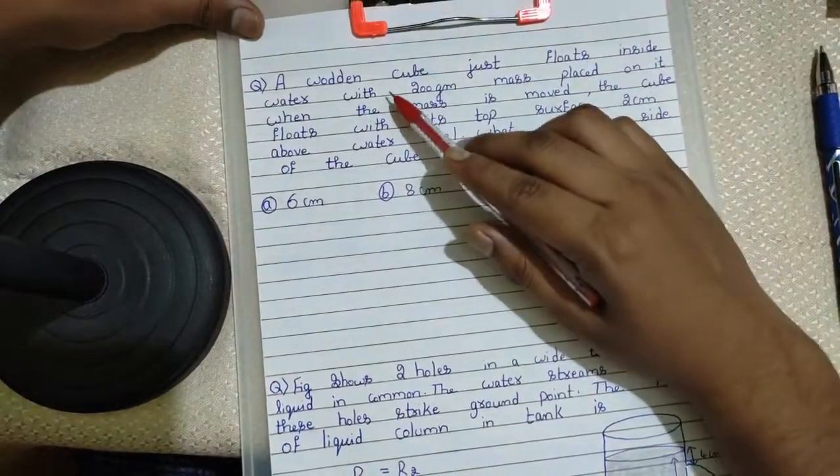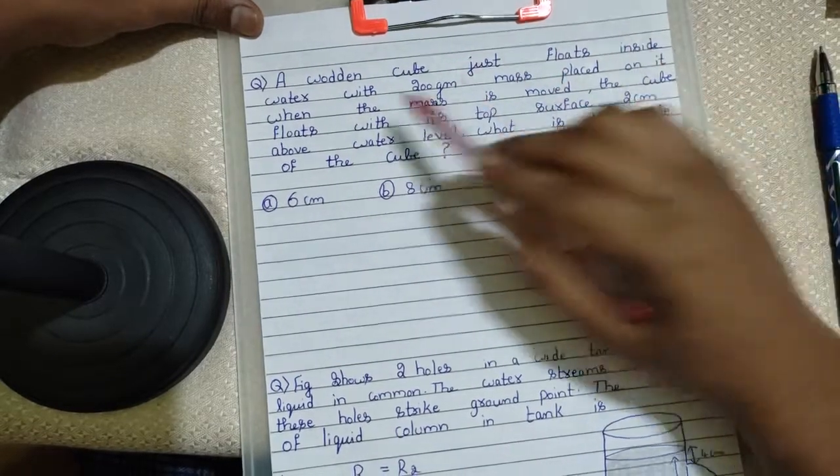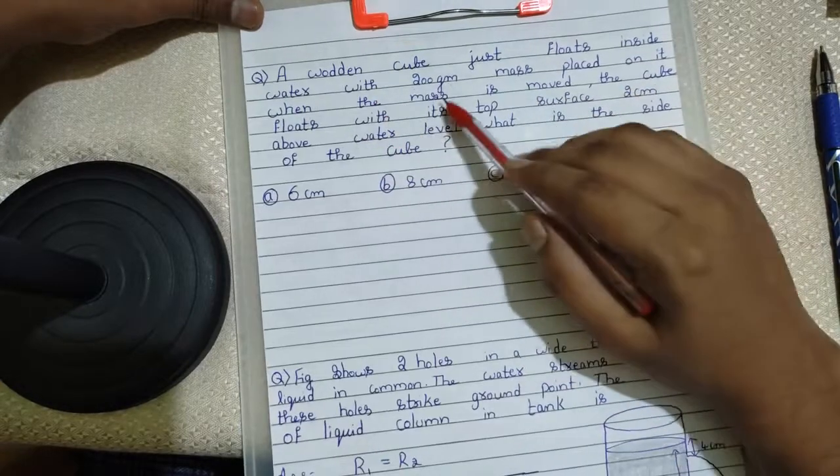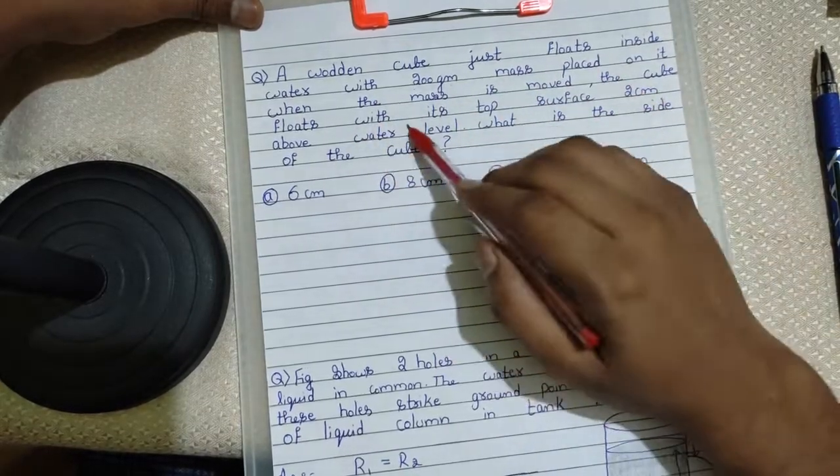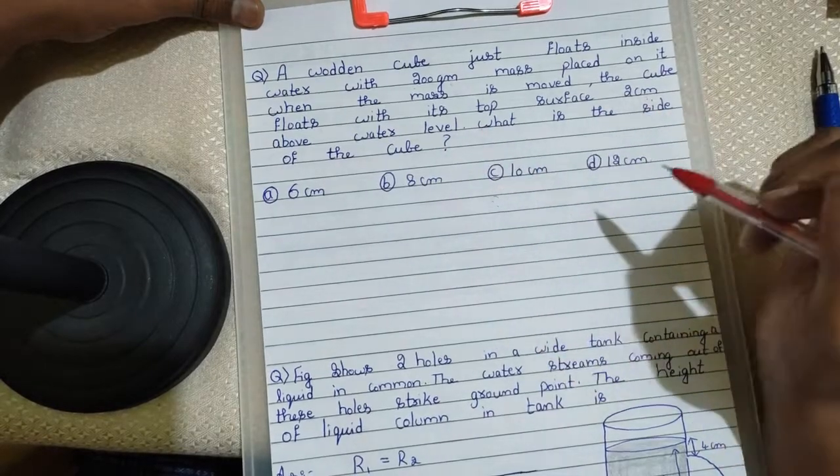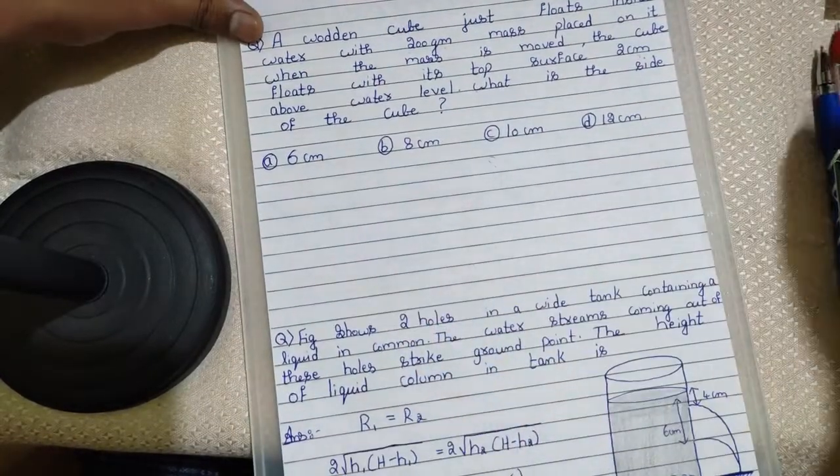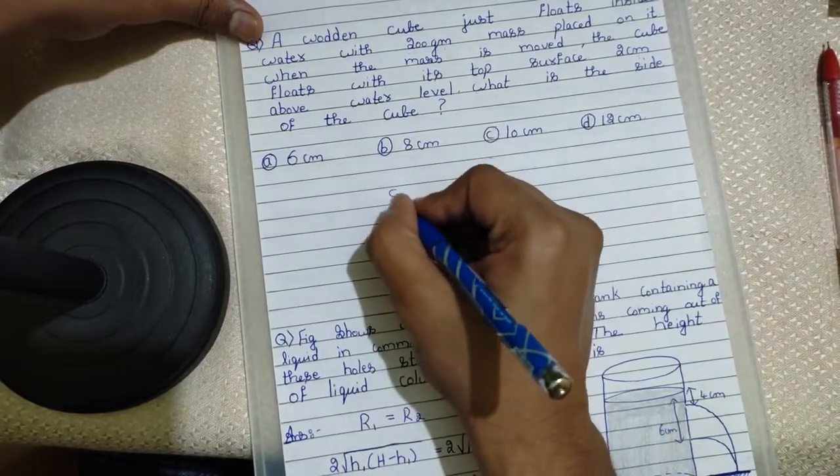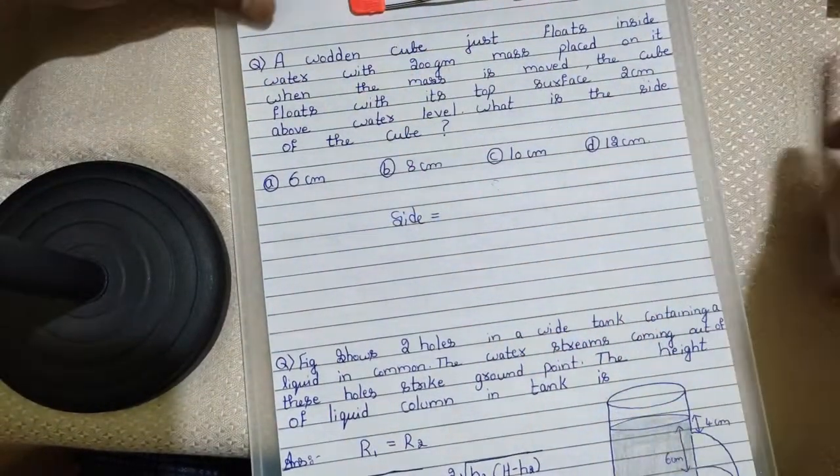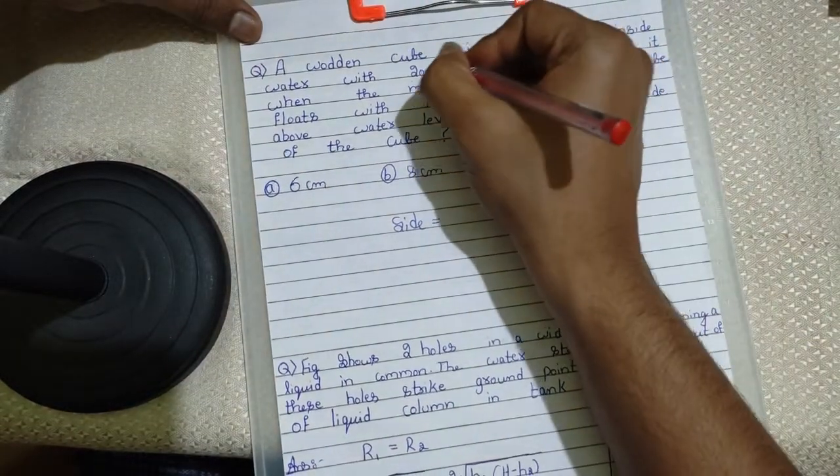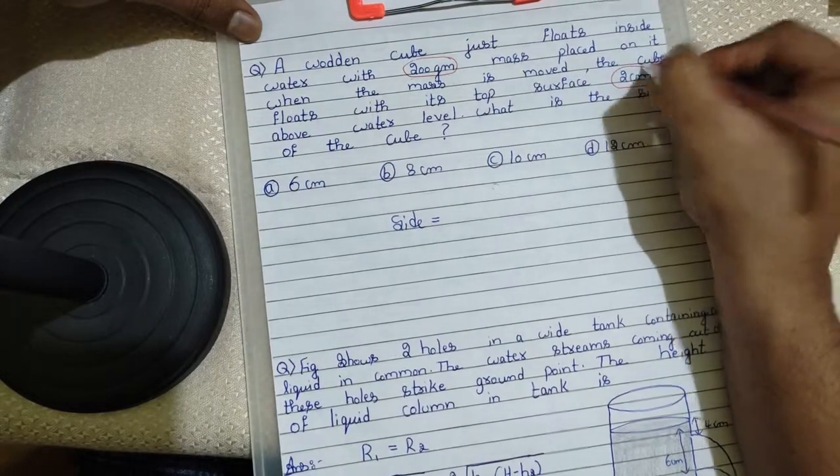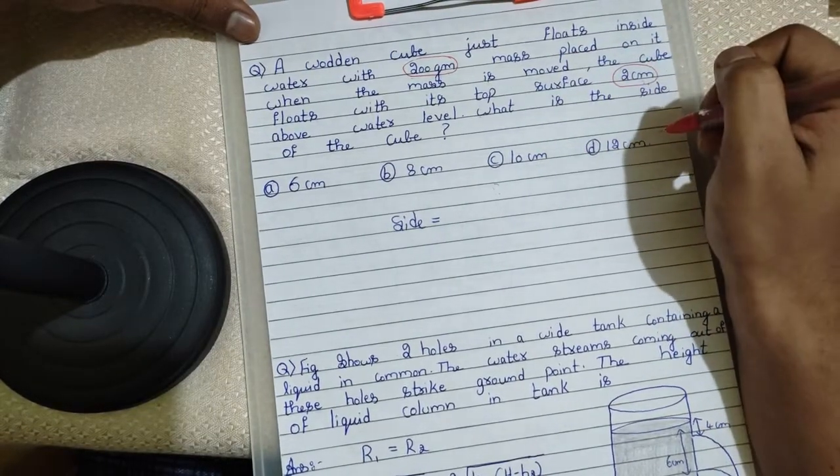Let's move on to the next trick. A wooden cube just floats inside water with 200 gram mass placed on it. When the mass is removed, the cube floats with its top surface 2 centimeter above the water level. What is the side of the cube? He is asking us side of the cube. Now, here comes the trick. Look at the quantities what they have given. They have given 200 grams. Next, 2 centimeter. These are the two numbers they have given in the question.